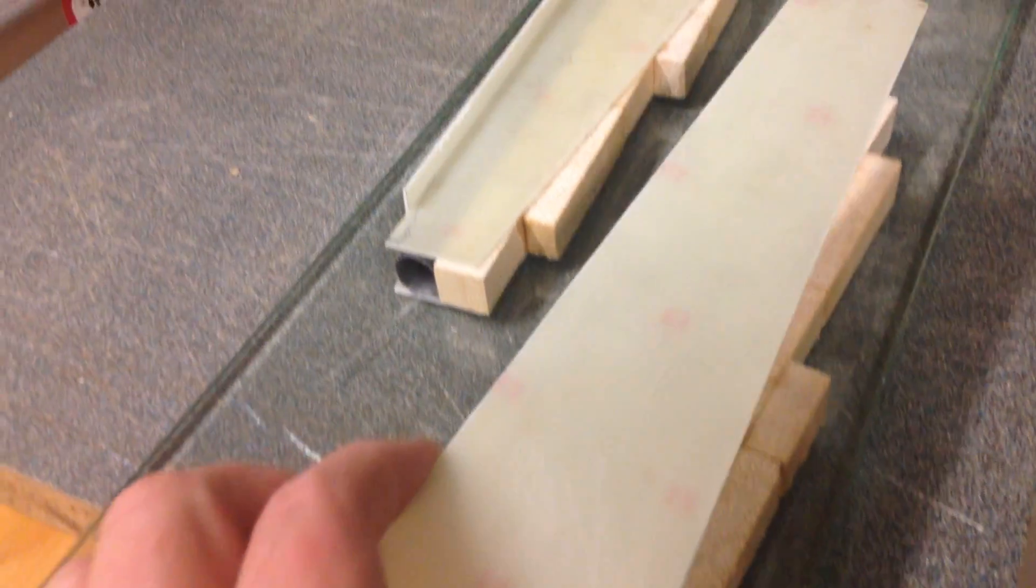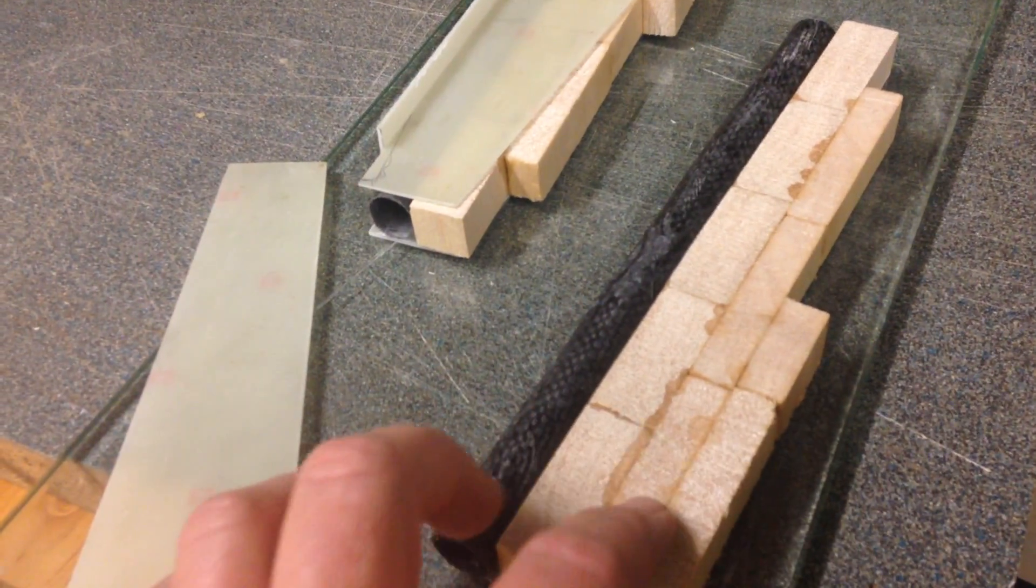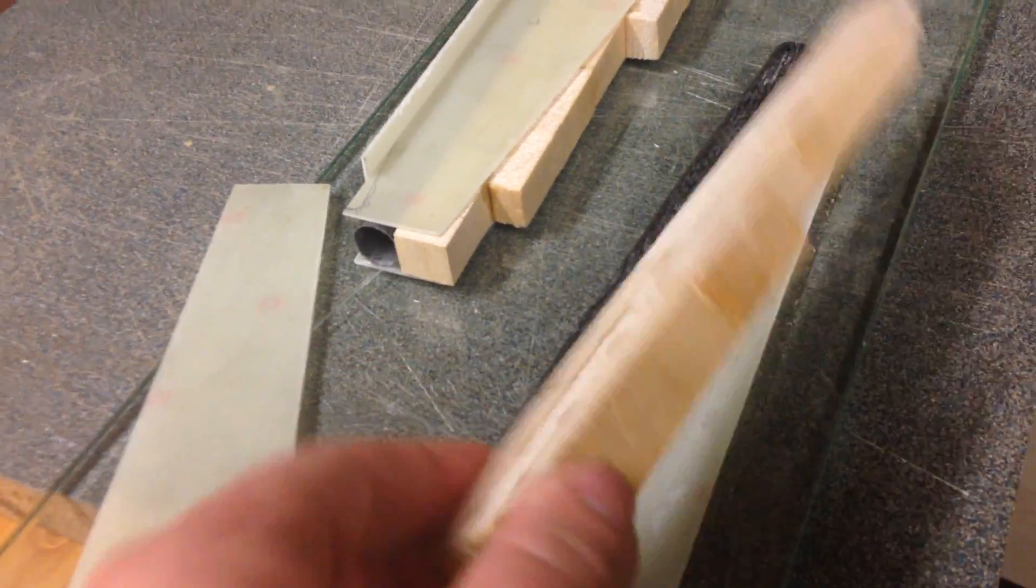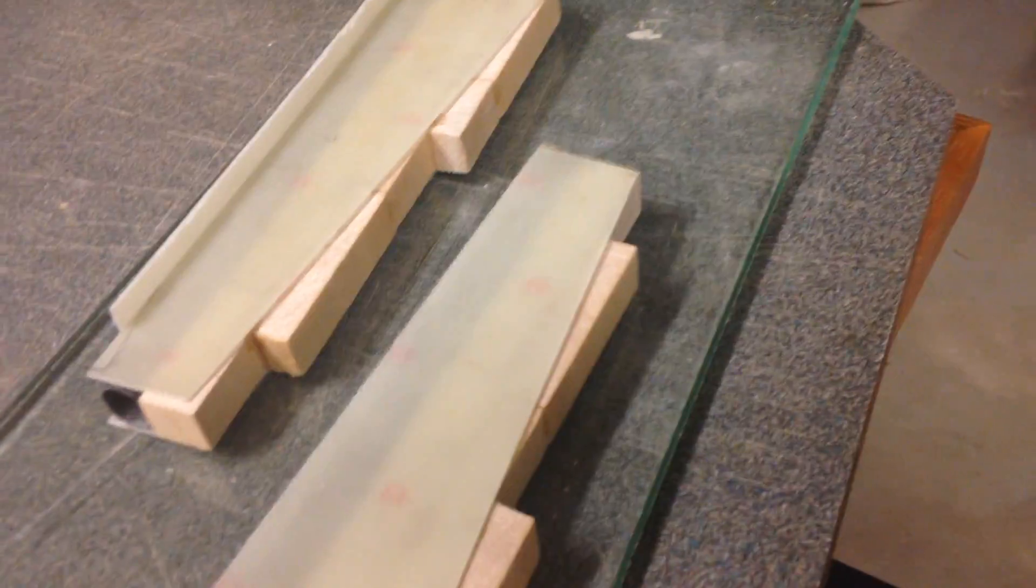Now I've got another bit of G10 board cut. I've got some vertical grain or end grain balsa just tacked together with CA, so I'll glue that all together and then once it's all set...